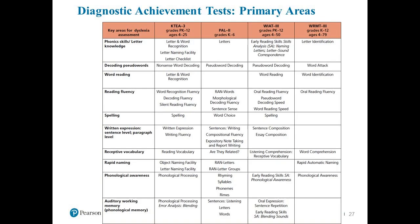Here are some key areas for dyslexia assessment. These are primary areas. On the left-hand column, these are areas highlighted by researchers across the reading world: phonics, letter knowledge, decoding pseudowords, word reading, word fluency, spelling, all the way down to auditory working memory. These primary areas can be assessed using specific diagnostic achievement batteries. Tests like the KT-3 (Kaufman Test of Educational Achievement, 3rd Edition) would have subtests in every single area to assess these primary areas.